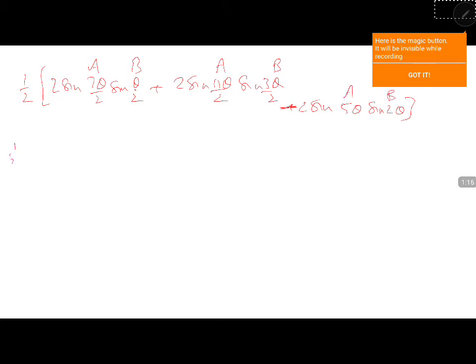So, it is 1 by 2 into. For the first thing, you will get cos of a minus b, 7 theta by 2 minus theta by 2 minus cos of a plus b, 7 theta by 2 plus theta by 2.